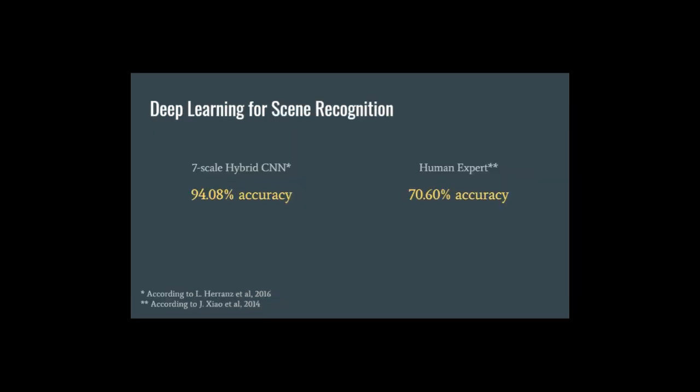The potential of the state-of-the-art CNNs reported in our paper can be easily seen if we quantify the obtained results. As an example, we can take the hybrid CNN that was presented previously. Implemented using seven different scales, the CNN obtained 94% classification accuracy on the same dataset on which a human expert could attain almost 70% accuracy. This clearly indicates that the complexity of the CNN models can capture very detailed information, managing to outperform even the human experts.